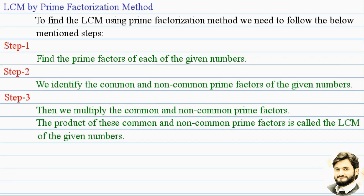Step number second میں ہم نے یہ identify کرنی ہے کہ common and non-common prime factors کون کون سے ہیں۔ Step number third میں ہم نے common اور non-common prime factors کو آپس میں multiply کرنی ہے اور جو result آئے گا اس کو ہم LCM of the given numbers کہیں گے۔ اب ہم ایک example کے through اس method کو سمجھنے کی کوشش کرتے ہیں۔